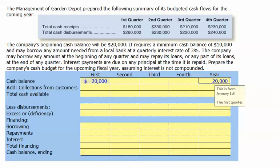The company requires a minimum cash balance of $10,000 and may borrow any amount needed from a local bank at a quarterly interest rate of 3%. The company may borrow any amount at the beginning of a quarter and repays its loan or any part of its loans at the end of any quarter. Interest payments are due on any principal at the time it's repaid.